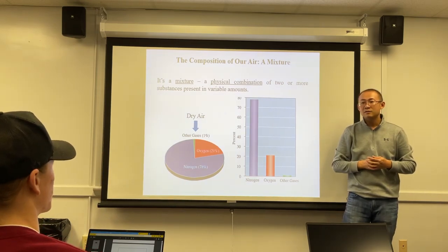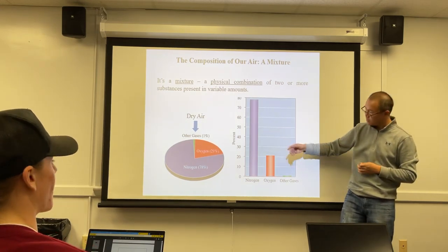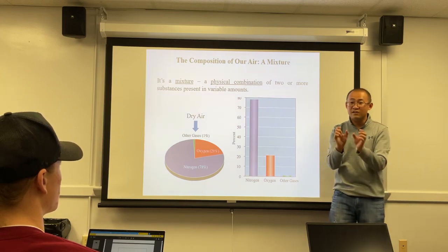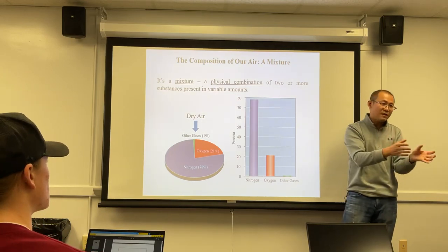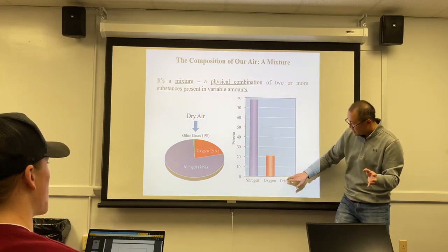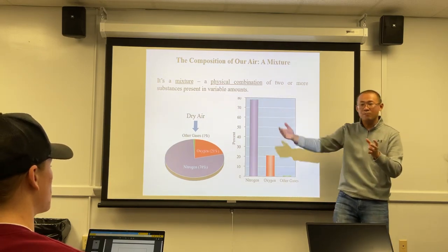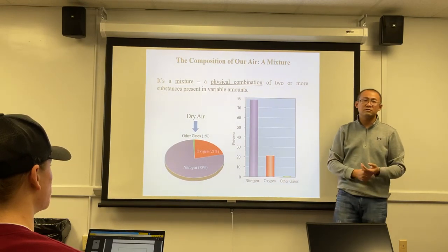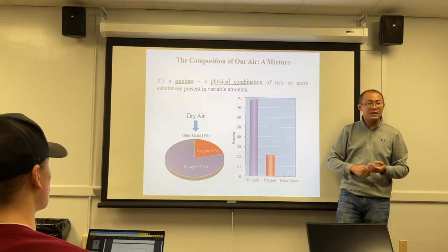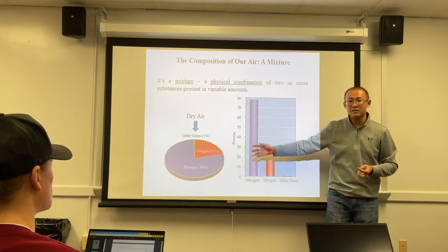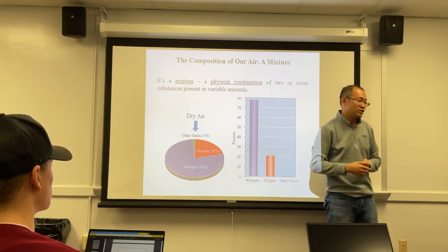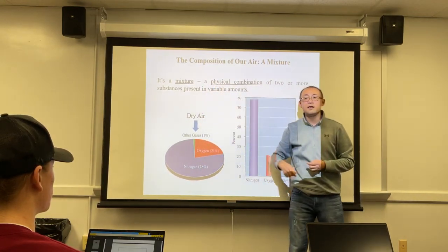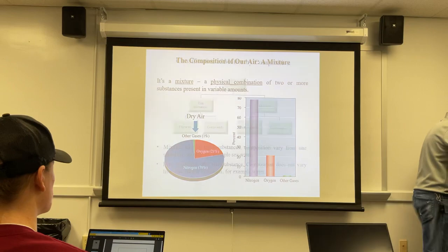Do we know what the other 1% is? Yes, we know and we'll talk about it. There are some variable components — in one area a gas may be at a slightly higher percentage than another. But nitrogen at ~78% and oxygen at ~21% are relatively stable because we are adapted to these concentrations. This also shows that air is a mixture.